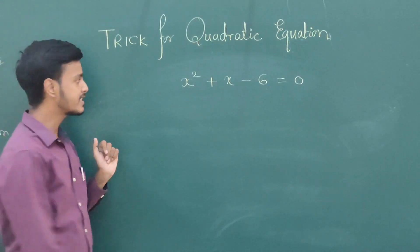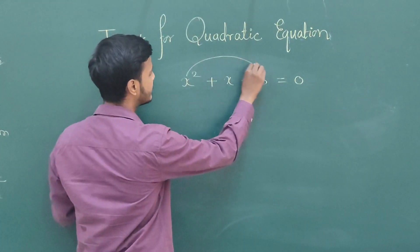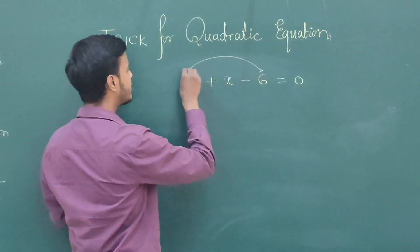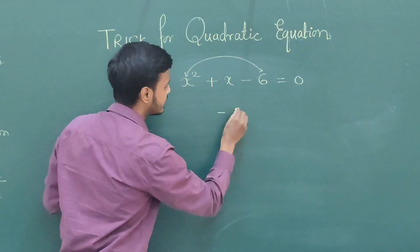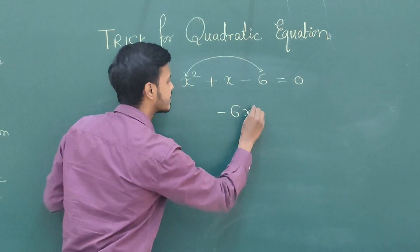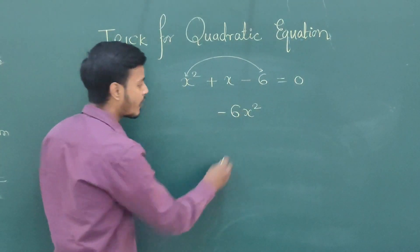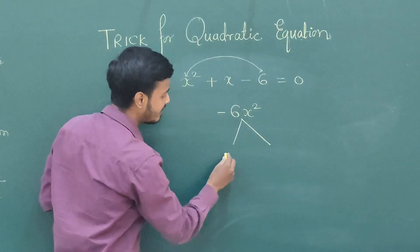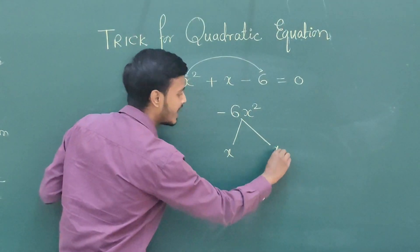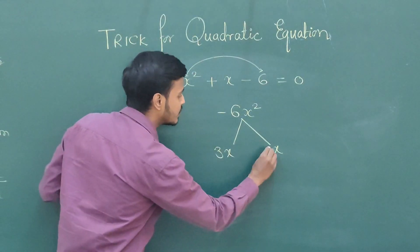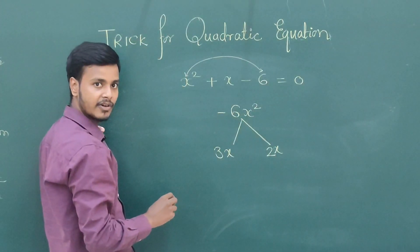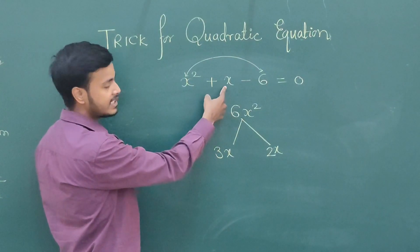So how can we find this? Just multiply this into this. When you multiply this into this, what you would be getting? Minus 6x squared. Now what are the factors of x squared? x into x. What are the factors of 6? 3 and 2. Now see this.